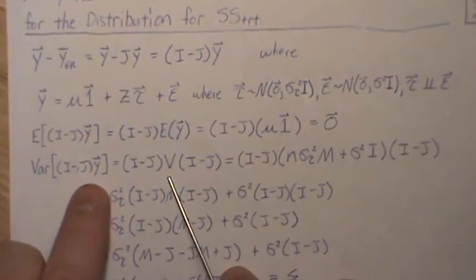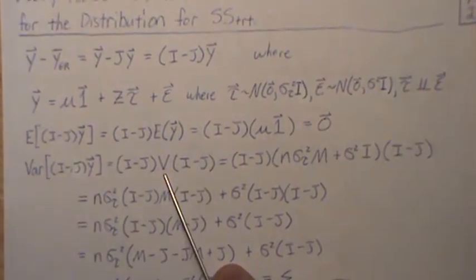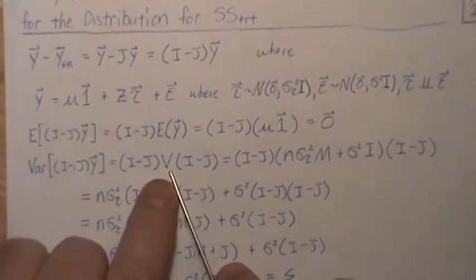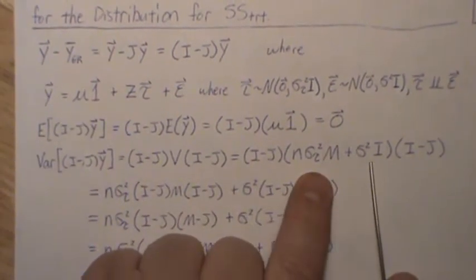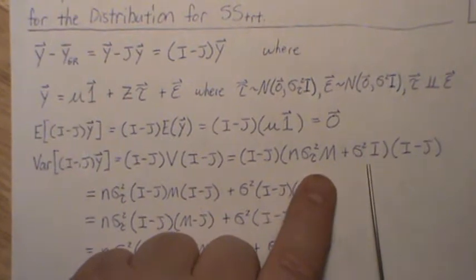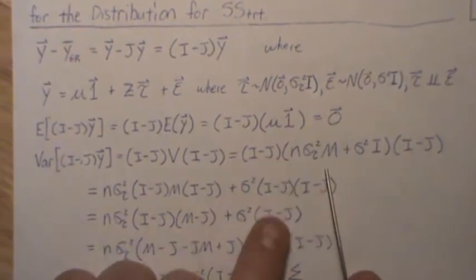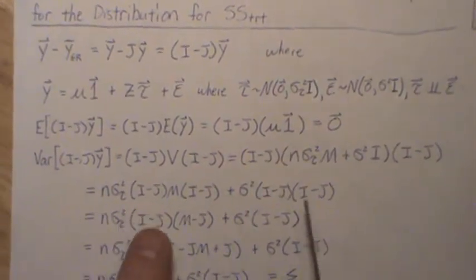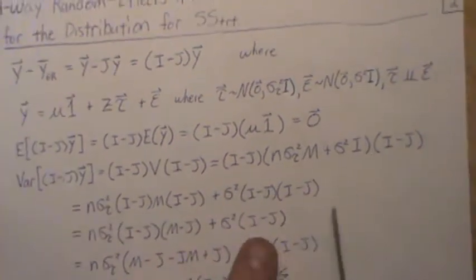The variance of Y, in a previous video we called it V, and V was this. Now when we take this product, we take this into here and we get this. And then we take these into that and we get this.